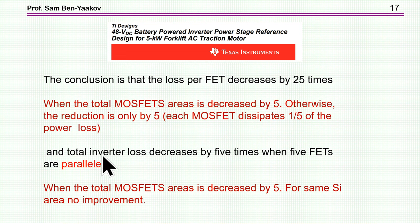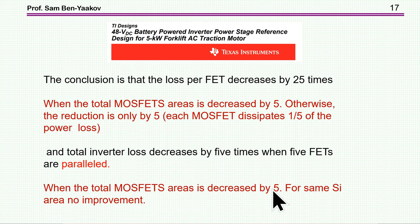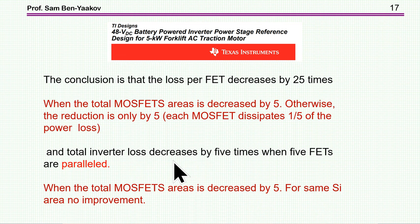TI also states that the total inverter loss decreases by 5 times when 5 FETs are paralleled. Again, this is misleading. It is reduced by 5 only when the RDS_on of each parallel transistor is the same as the single transistor — meaning you've increased the total silicon area by 5. But that is not a fair comparison. For the same total silicon area, there is really no improvement in conduction loss.